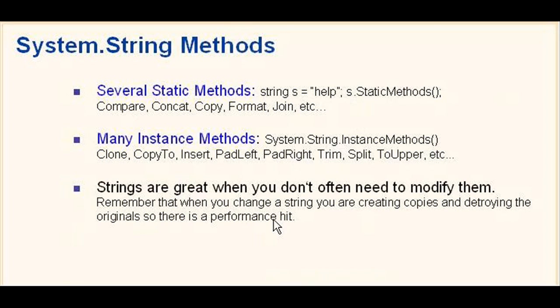Now there are many instance methods as well. System.String dot is going to get those instance methods, as you've seen throughout the training. We'll see them in depth. You can Clone, you can CopyTo, Insert, PadLeft, PadRight - this is going to add white space or another character to left or to the right of what you have there in your string.